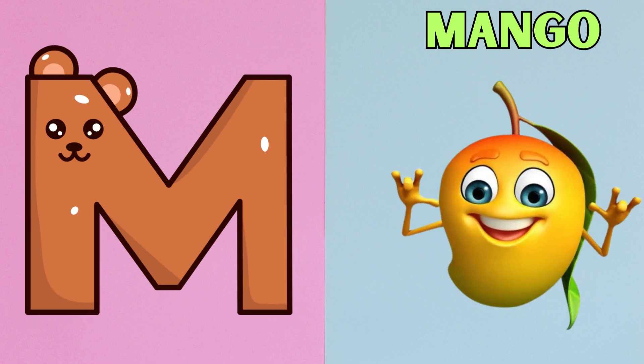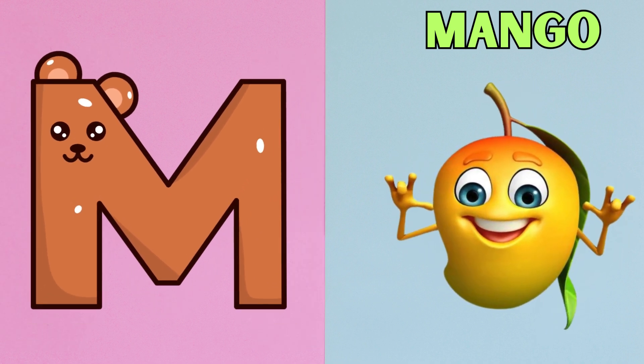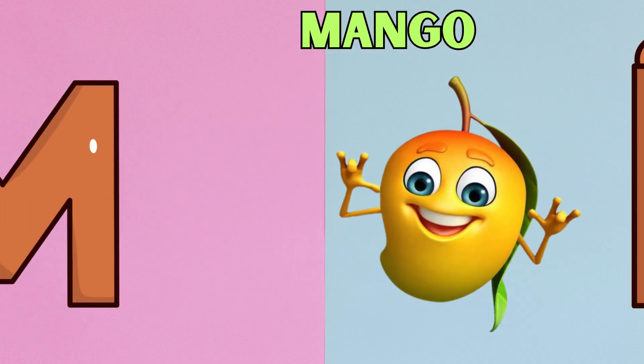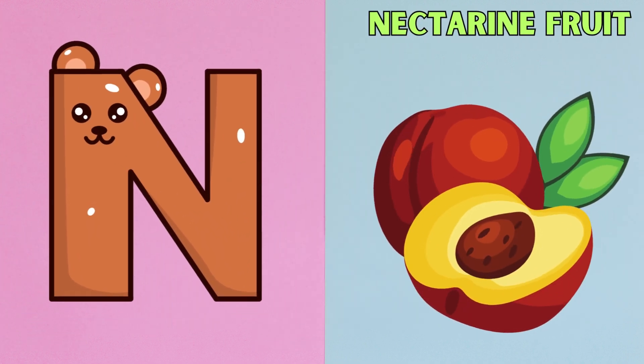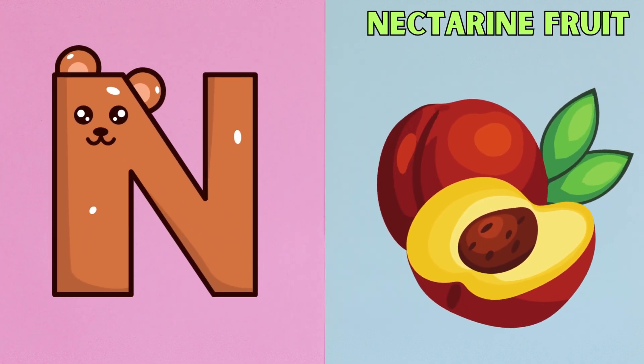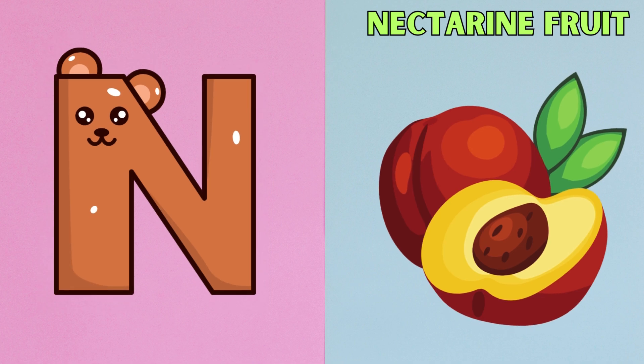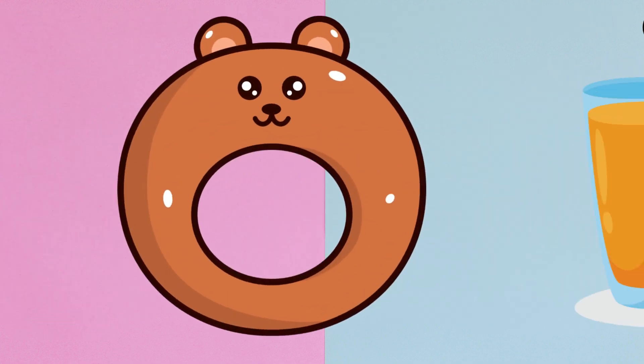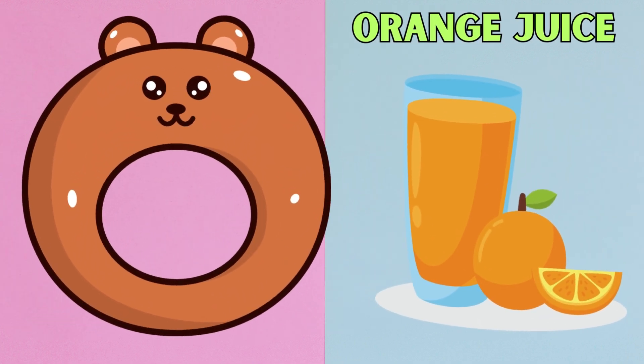M is for Mango. M, M, Mango. N is for Nectarine Fruit. N, N, Nectarine Fruit.